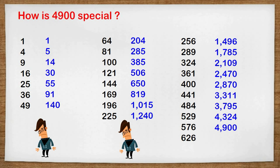Still no square. 1,496, 1,785, 2,109, 2,470, 2,870, 3,311, 3,795, 4,324 and 4,900.